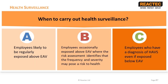Health surveillance is required if work activities expose employees to hand-arm vibration. By law, employers must assess the risk, and if the risk assessment shows that employee health is likely to be at risk, then an employer must take action, as shown in the three key points on screen.